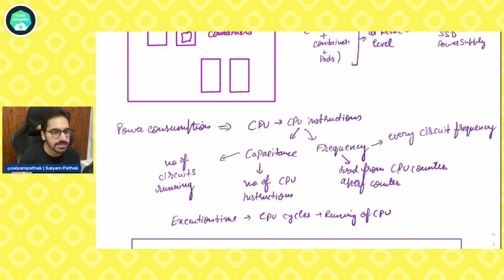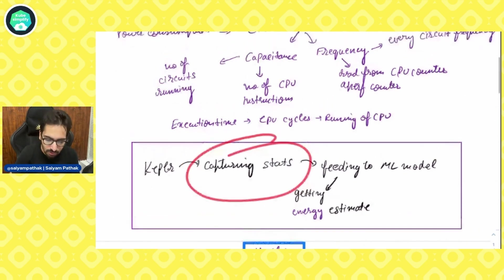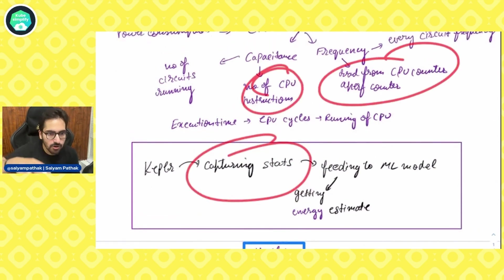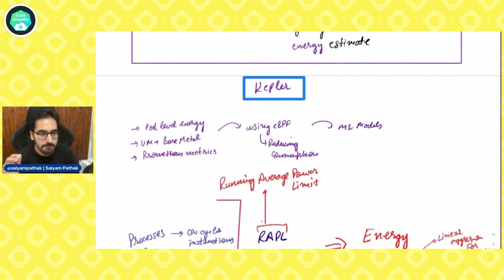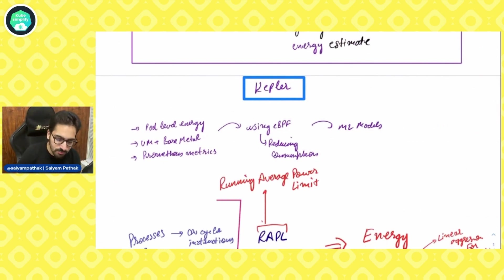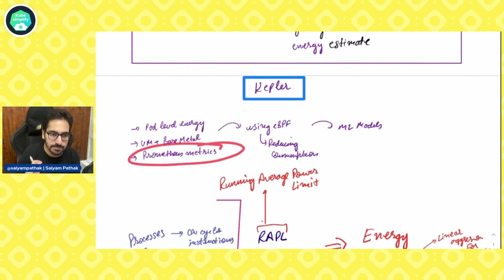Execution time is essentially the CPU cycles. To recap: Kepler, installed on our system, will capture all these stats using eBPF, feed them into the machine learning model, and get the energy estimates. Basically there are three things in how Kepler works: eBPF is used to gather pod-level energy, Kepler can also get metrics of VMs and bare metal, and it exposes them as Prometheus metrics.